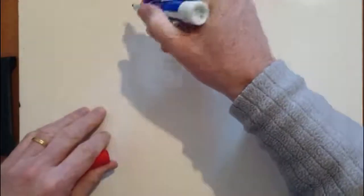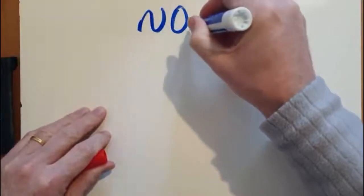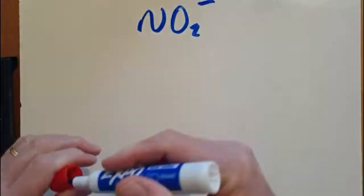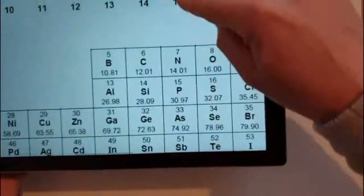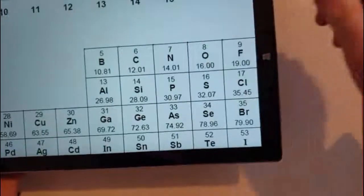Okay, the Lewis structure for the nitrite ion, NO2-. First of all, you need to know the number of valence electron pairs. So nitrogen is in group 15 and oxygen is in group 16.